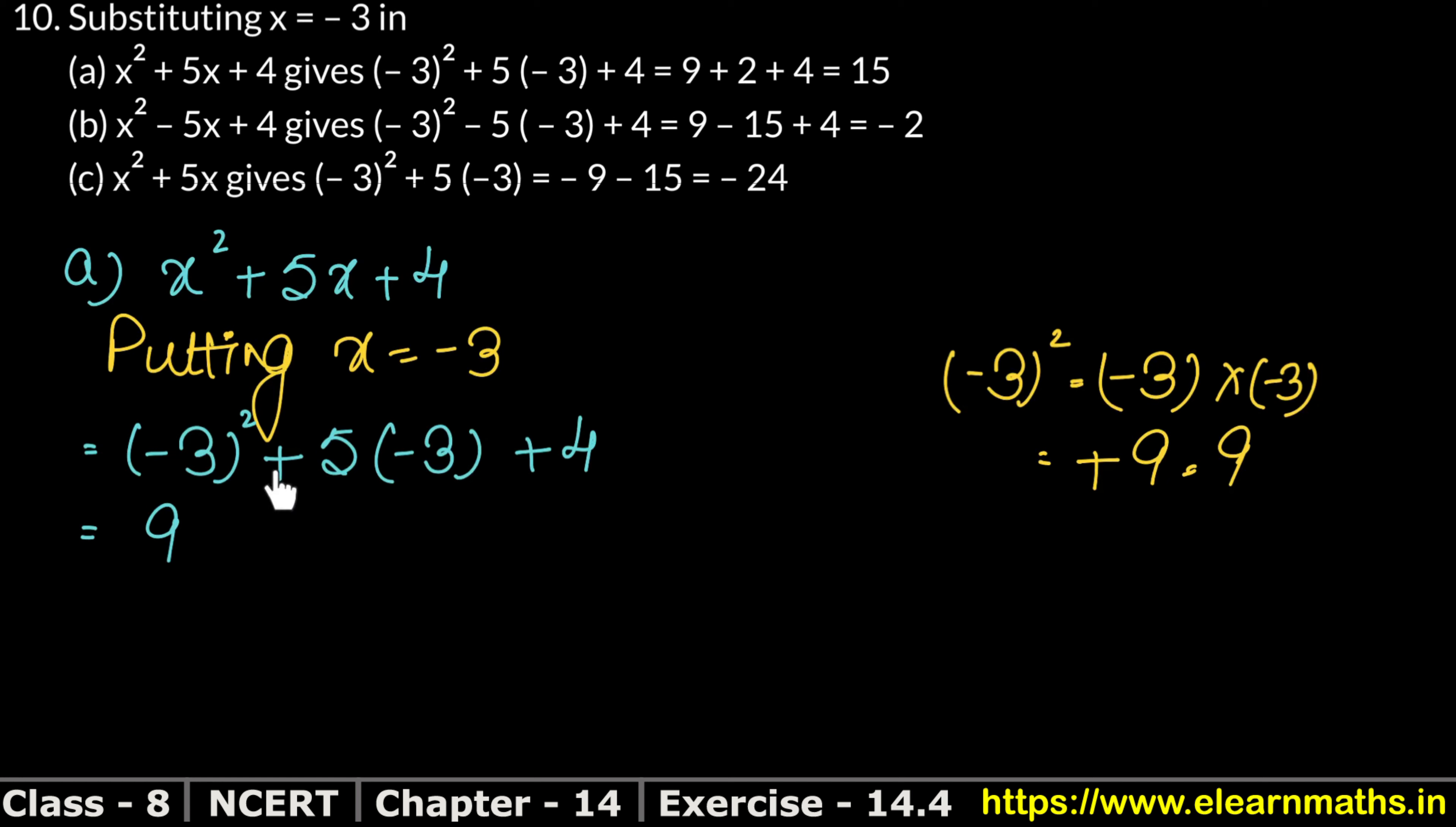Now see, 5 plus is plus and minus 3. Plus minus multiply - plus into minus is minus. And we multiply 5 into 3, so 5 into 3 is 15. So plus 4 as it is.